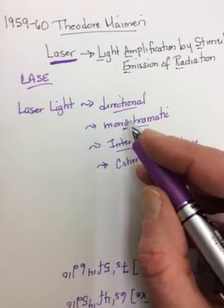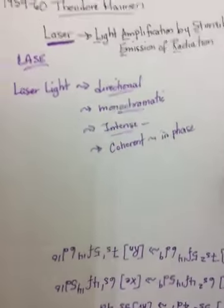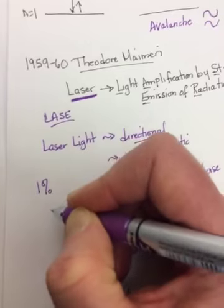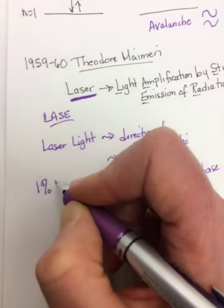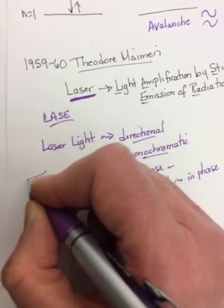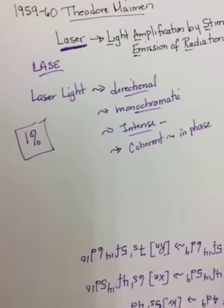Now, unfortunately, lasers are really inefficient. When they were first made, it might be a little better, but not too much. They were about 1% efficient. 1% of the energy being used is converted into the light of the laser. So they're really inefficient. We're working on it, but they're still not great.